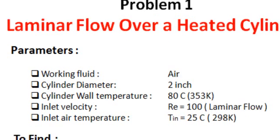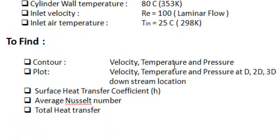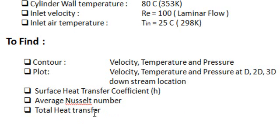We have to find the following parameters: velocity, temperature, and pressure contours. We also have to plot velocity, temperature, and pressure at 1D, 2D, and 3D distance from the downstream of the cylinder. Additionally, we need to find the surface heat transfer coefficient, the average Nusselt number, and the total heat transfer.